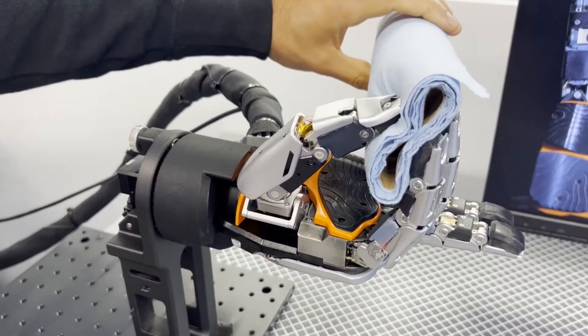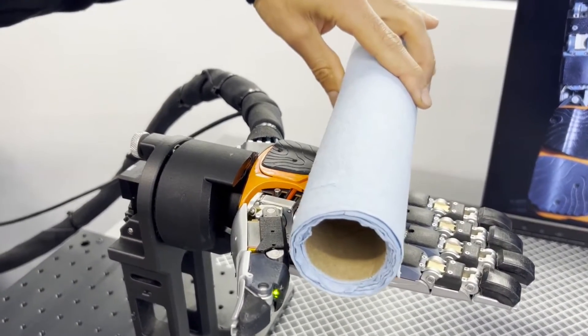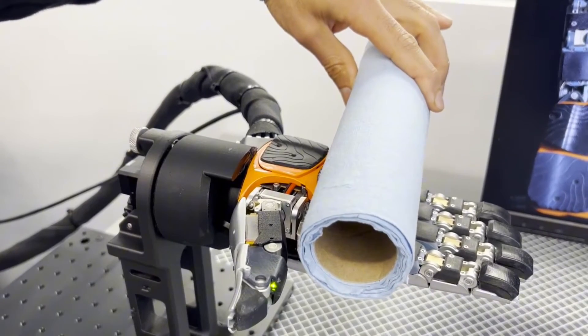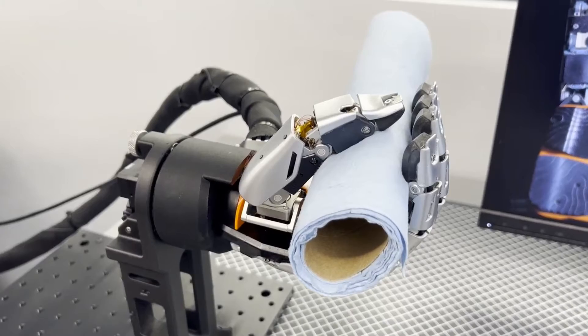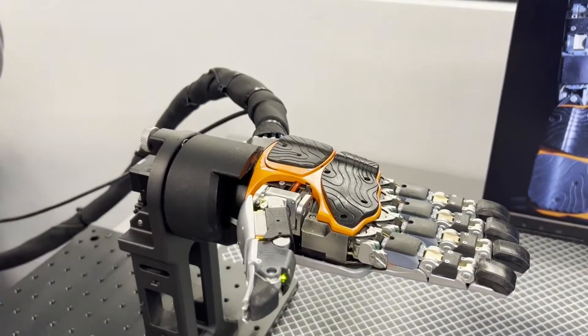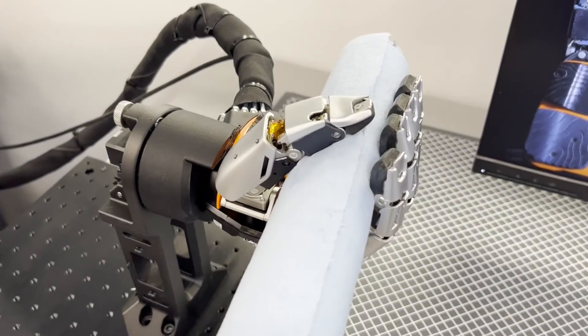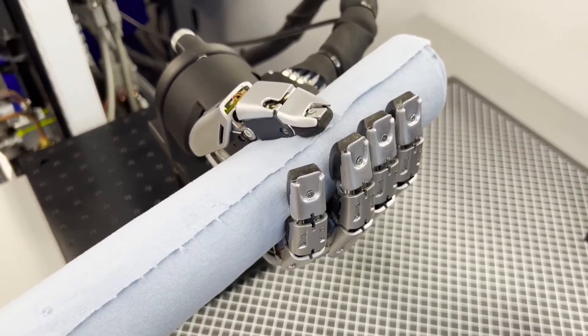This swift adaptability is not just a technical achievement but also a practical one. It means that robots like the Phoenix can be deployed in dynamic environments where the nature of tasks changes frequently. The seventh-generation Phoenix's ability to learn tasks in a structured and controlled environment, such as sorting objects of different colors, demonstrates its potential to take on more complex and varied roles in the future.